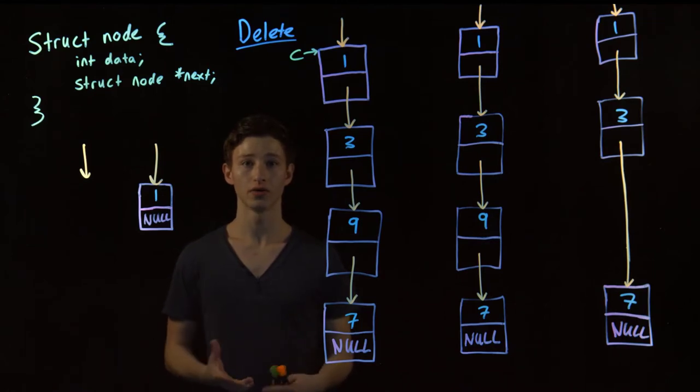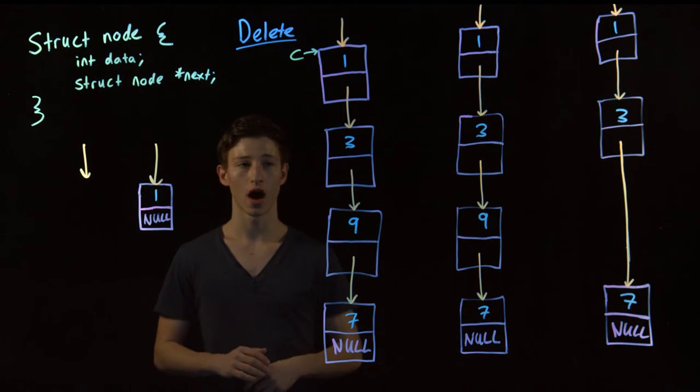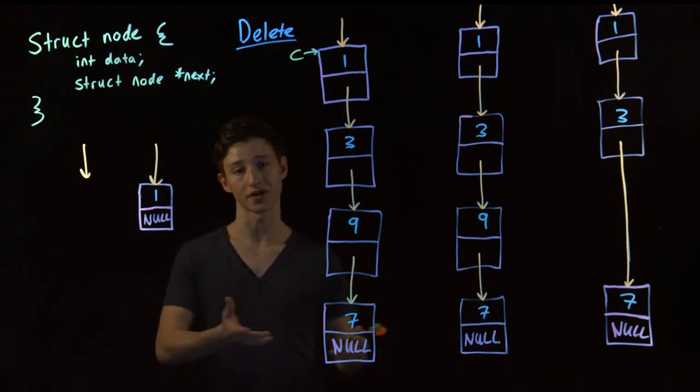So now we'll be doing our final example: delete. Now, there's a few different delete functions we can write. We'll be doing delete at index. So say, for example, we were given a list and a number, for example, 3.